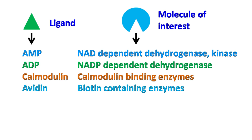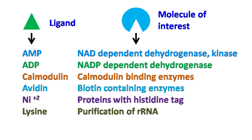Metals such as nickel can be used for the purification of proteins that have a histidine tag. Lysine can be used for the purification of rRNA.